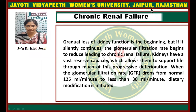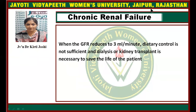Gradual loss of kidney function begins silently and continuously as the glomerular filtration rate begins to reduce, leading to chronic renal failure. Kidneys have a vast reserve capacity which allows them to support life through much of this progressive deterioration. When the glomerular filtration rate (GFR) drops from the normal 125 ml per minute to less than 30 ml per minute, dietary modification is initiated. When GFR reduces to 3 ml per minute, dietary control is not sufficient and dialysis or kidney transplant is necessary.